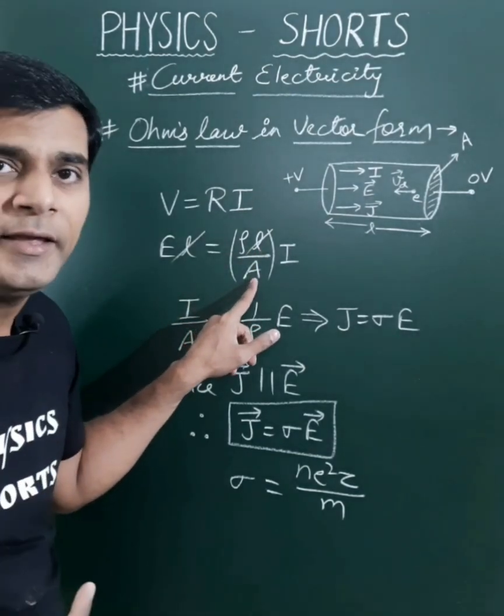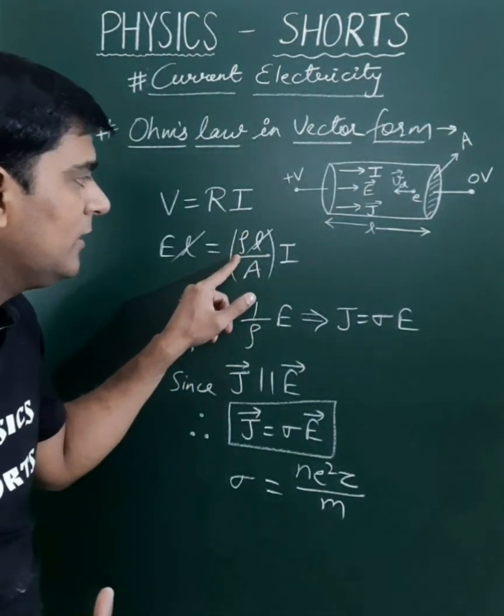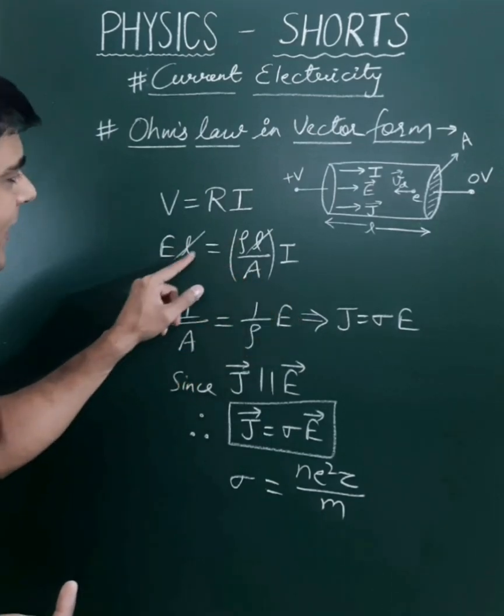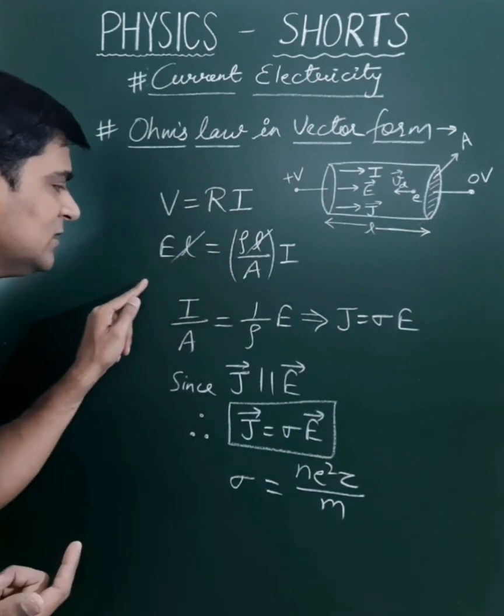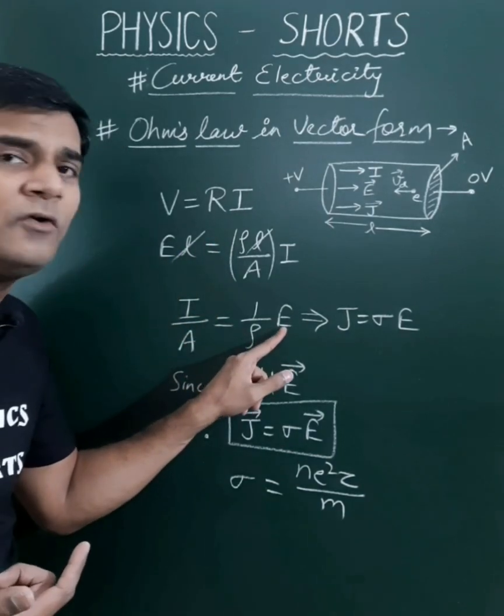A is the cross-sectional area and ρ is the resistivity. I is the current. So the L and L will cancel out, and we get I/A, which equals—we are shifting ρ here—so 1/ρ times E.